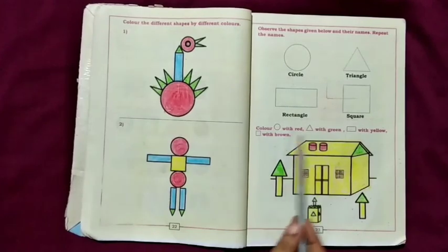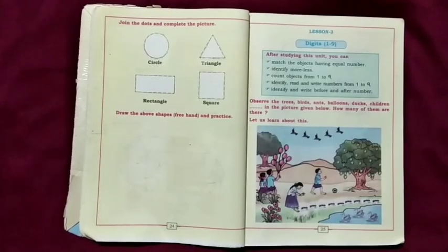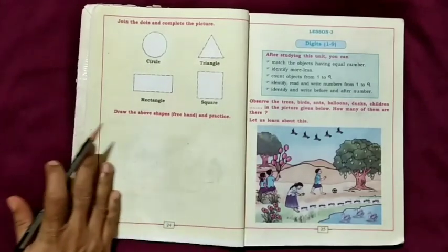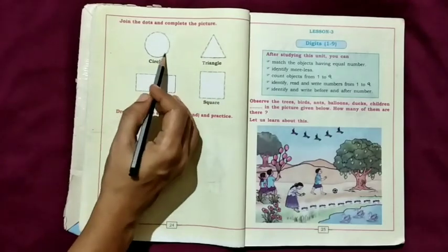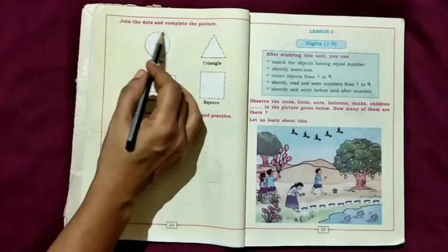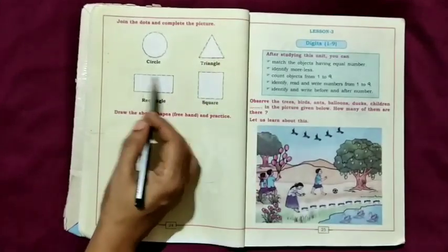Color this picture and complete. Join the dots and complete. Take your pencil and join this dot and complete the circle, triangle, rectangle, square.